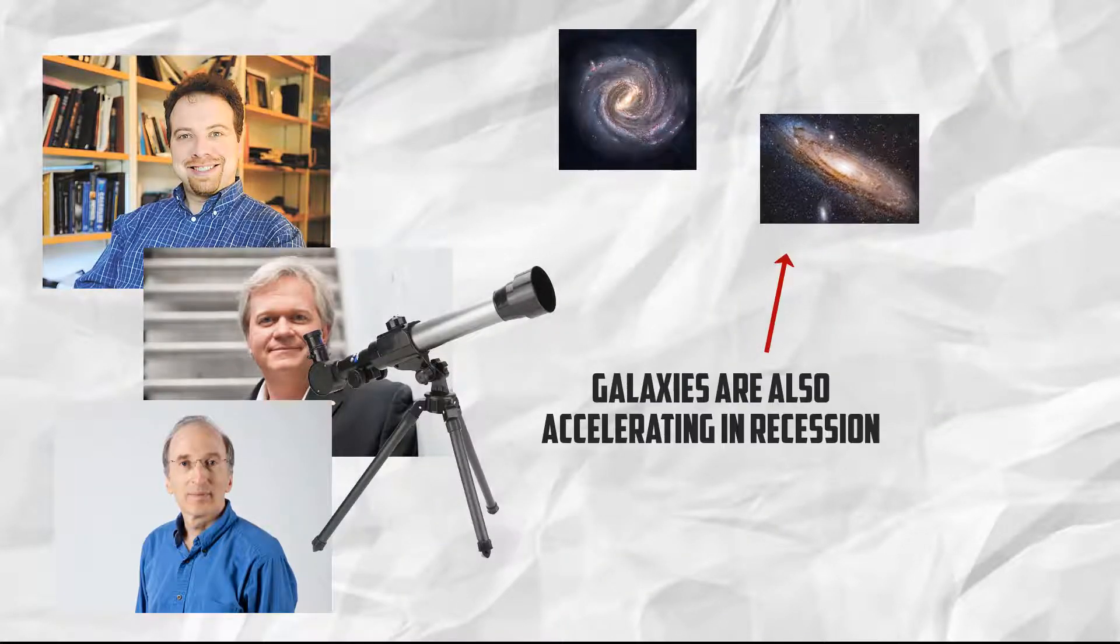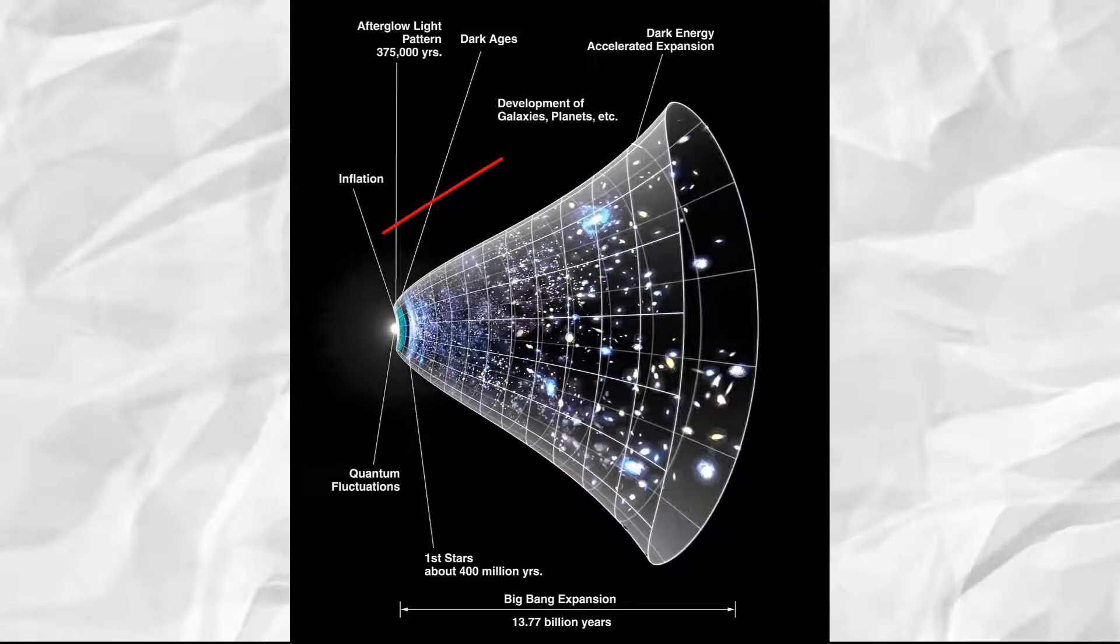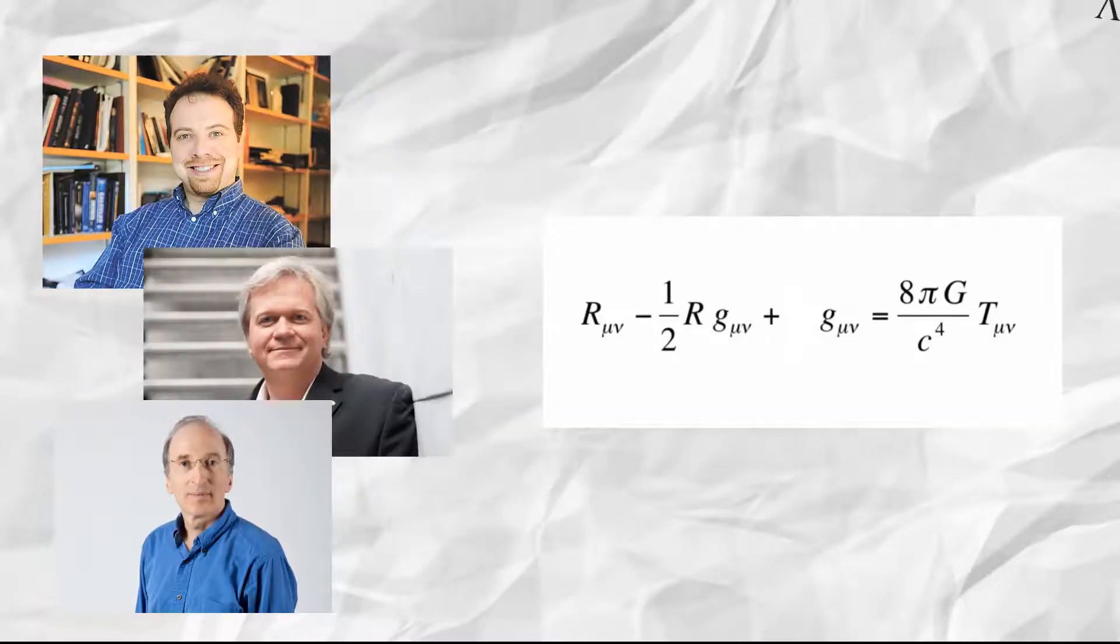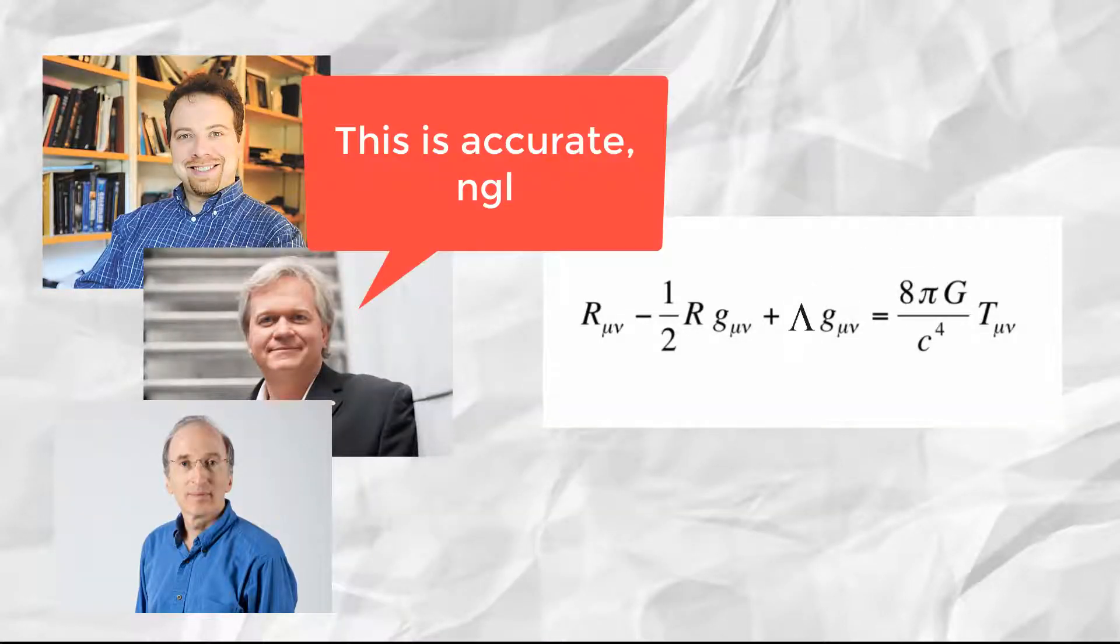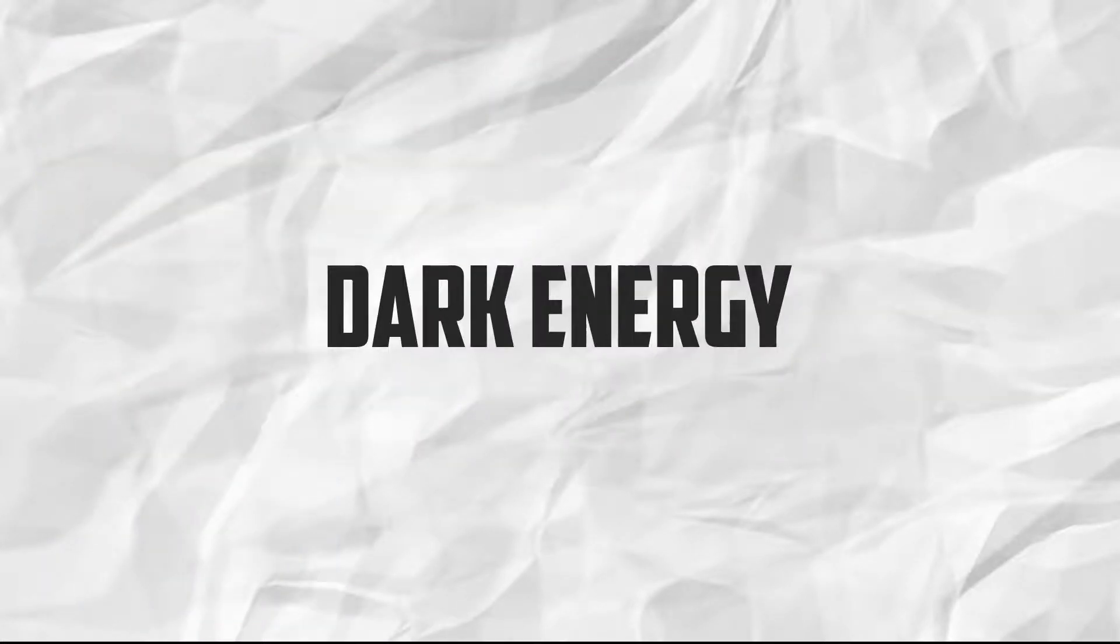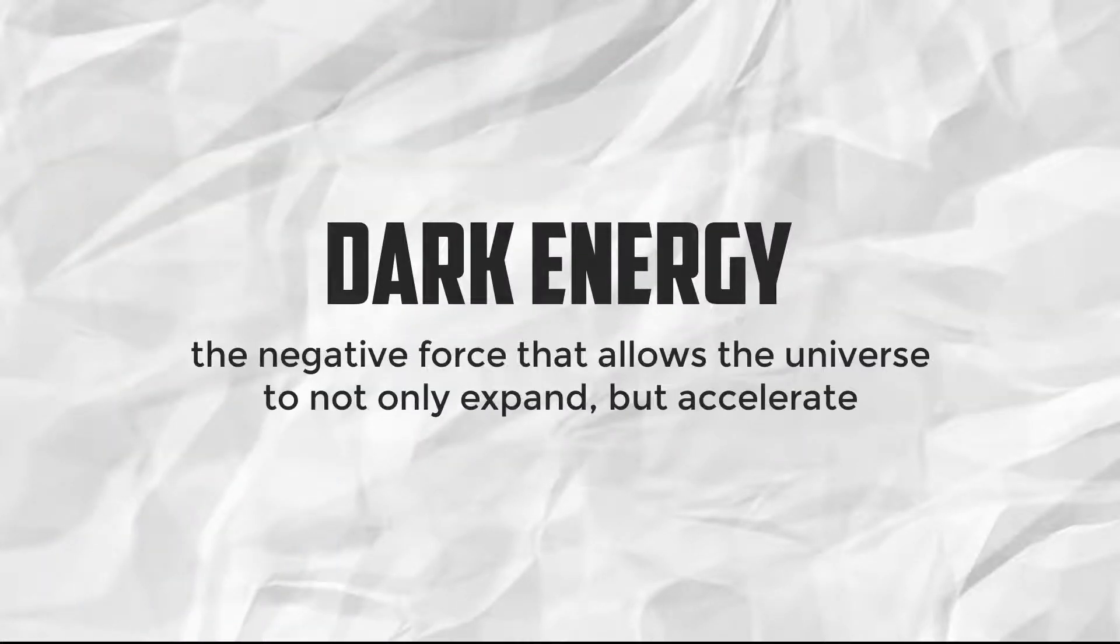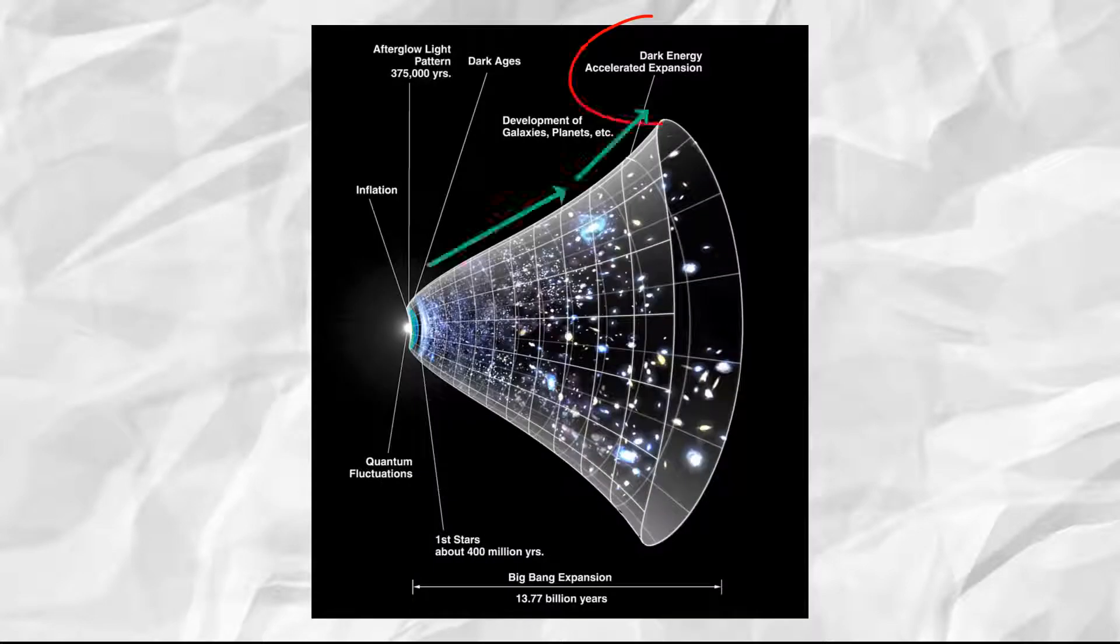However, later on, scientists noticed that the galaxies were becoming dimmer, meaning that they were moving away, meaning that the universe was expanding. After putting lambda back into Einstein's equations, they noticed that the new equations fit the real state of the universe. Dark energy is now presumed to be the negative force that allows the universe to not only expand, but accelerate.